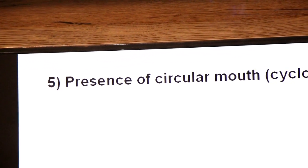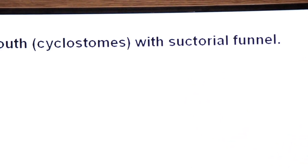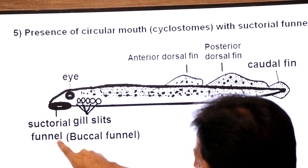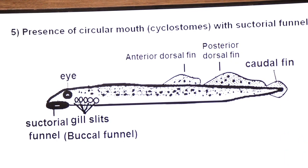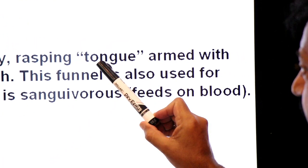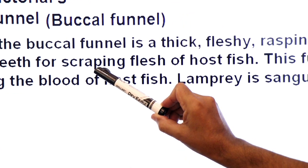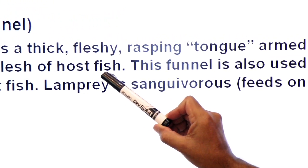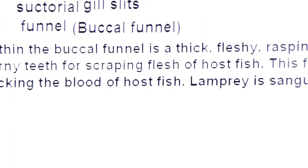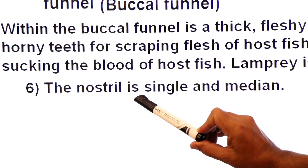Due to the presence of a circular mouth, members of subphylum Agnatha are placed in superclass Cyclostomata. In the diagram of lamprey, you can see a suctorial mouth with a suctorial funnel, also called a buccal funnel. Within the buccal funnel is a thick, fleshy, rasping tongue armed with horny teeth-like structures for scraping the flesh of the host fish. This funnel is also used for sucking the blood of the host fish — that is why lamprey is sanguivorous.